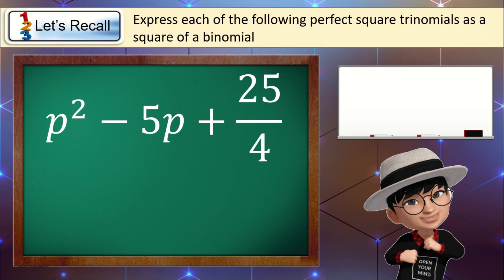Let's have another example. Express p squared minus 5p plus 25 over 4 as a square of binomial. Step 1, we get the square root of our first term. The square root of p squared is p. We copy the sign of our second term, so we have minus, and we get the square root of our last term.